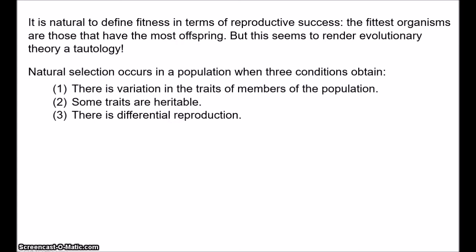Natural selection occurs in a population when three conditions obtain. First, variation: there is variation in the traits of the members of the population. For example, in Kettlewell's moths, some moths are dark, other moths are light. Second, heredity: some traits are heritable — organisms resemble their parents more than they resemble unrelated individuals. So if two dark-coloured moths breed, the offspring will also be dark-coloured.